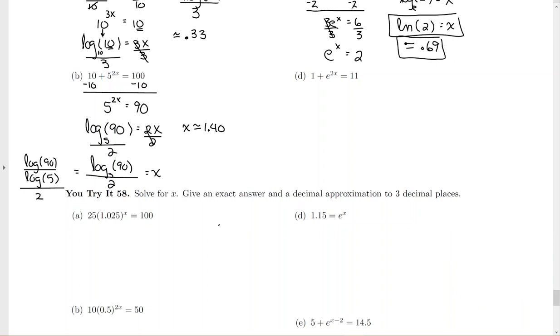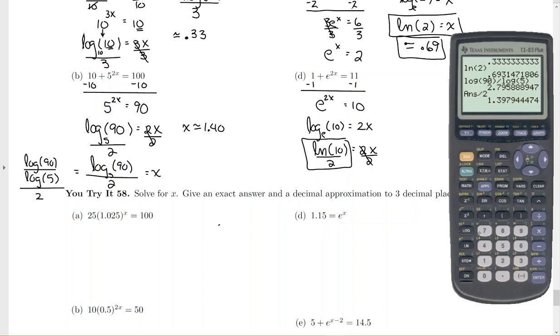For letter d, again, I see an addition sign, a positive 1. So take away 1 from both sides. Rewrite log base e of 10 equals 2x. Log base e is natural log. And then get the x by itself, so divide both sides by 2. So your exact answer is natural log of 10 divided by 2. Your approximation, do the ln button, 10, divide by 2. So about 1.15.